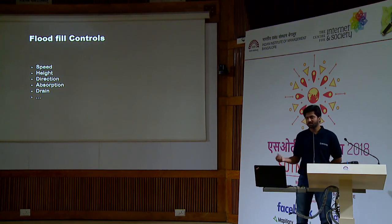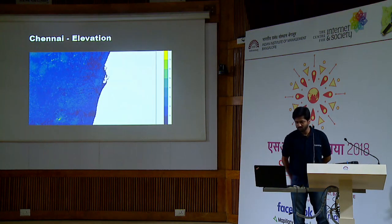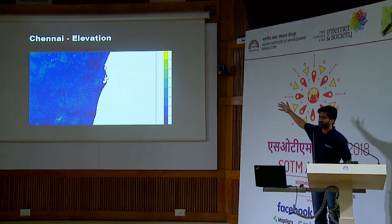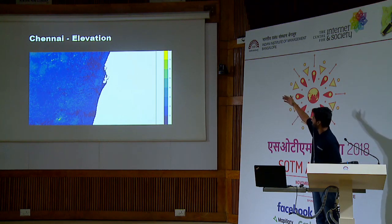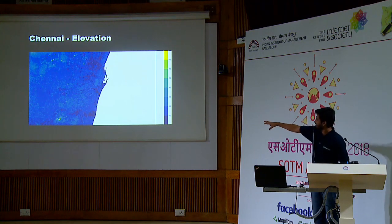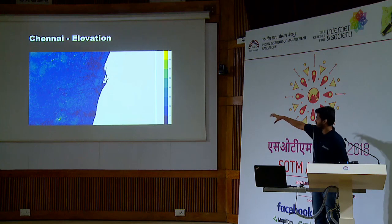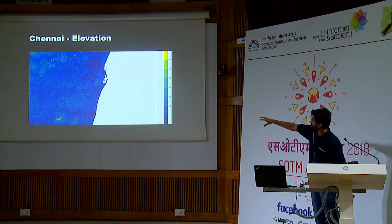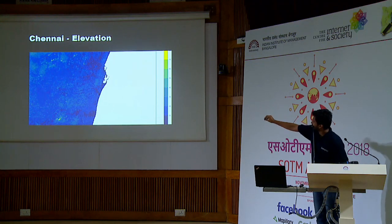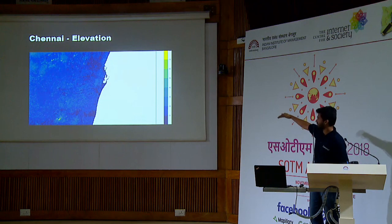I've done this for Chennai for now, and then we can expand this for more. This is the Chennai elevation map — it represents different heights. You do see certain yellow spots which are at a higher elevation. There are spots at a higher altitude, but there are also certain small puddles or lakes which are at a zero level, or almost less than 10 meters level.